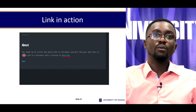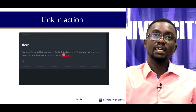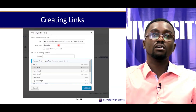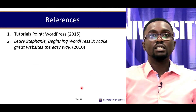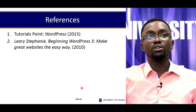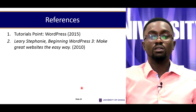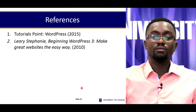Here are links in action. You can see that when you go to the About page, all the text is a different color from 'describe' — 'describe' is blue and underlined, which tells us there is a link on which we can click, and it will take us to the URL we specified in the preview. Two references for this session: WordPress 2015 from Tutorials Point, as well as Larry Ulrich's Beginning WordPress 3: Make Great Websites the Easy Way. Thank you for staying with us. I'll see you next time for Session 7.